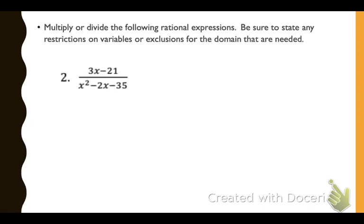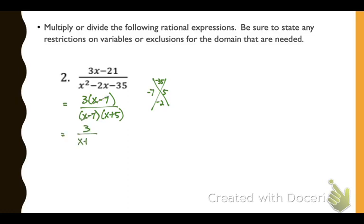Number 2: we're simplifying, starting by factoring the numerator and denominator. We factor out a greatest common factor of 3, then do quadratic factoring looking for two numbers that multiply to give us negative 35 and combine to give us negative 2 — that's negative 7 and 5. We divide out the common x minus 7 factors, leaving 3 over x plus 5. The exclusions are 7 and negative 5.